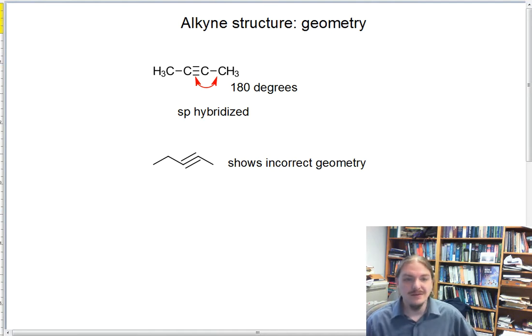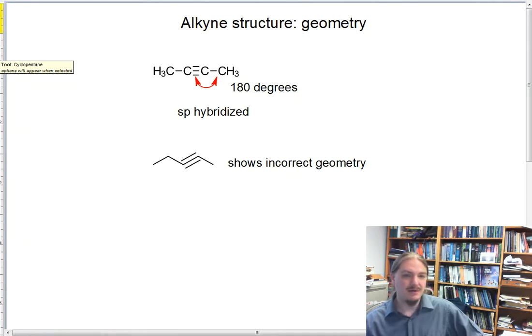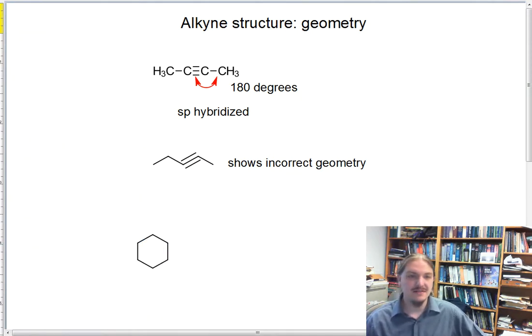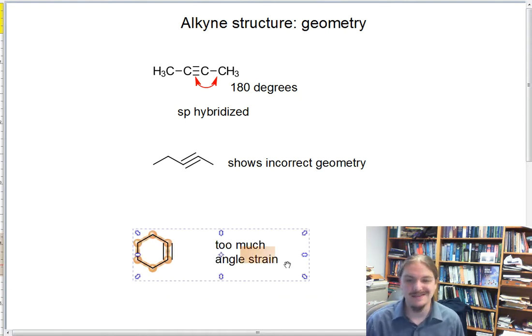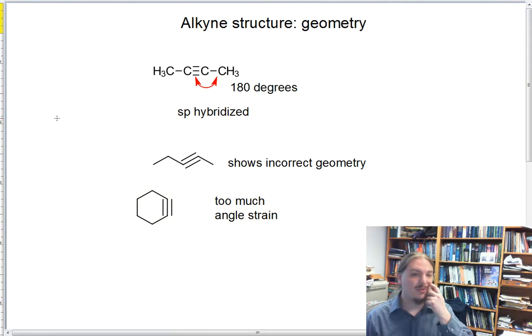The linear geometry requirement of an alkyne means that cycloalkynes of small ring sizes, like even six carbons, would have too much angle strain to exist as a stable molecule.